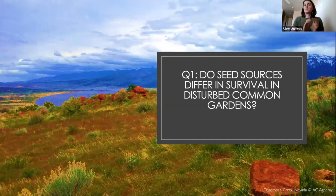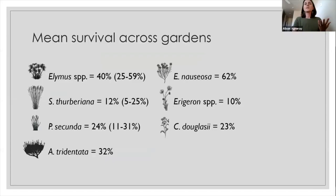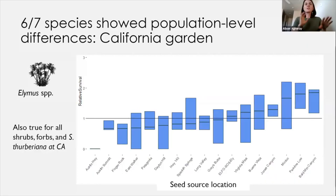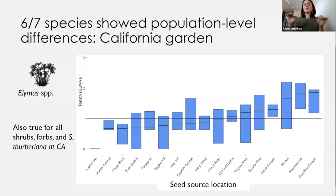With that data collected, we answered our first question, looking at differences in who survived based on where the seeds came from. Across the board, these are just average rates of survival across all the gardens. Survival means you not only emerge from the ground, but then also live to the end of the season. There was a huge range in survival by species, and the numbers in parentheses indicate the survival rates across gardens. Let's zoom in on Elemus at the California garden. This graph has seed sources across the x-axis and survival at that garden on the y, with a black line indicating average survival. You can see there are a lot of populations either above or below average.